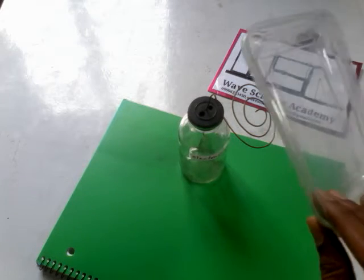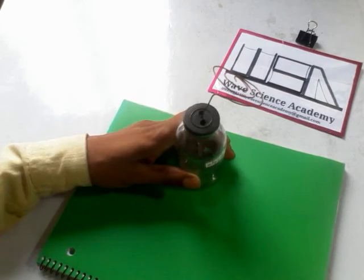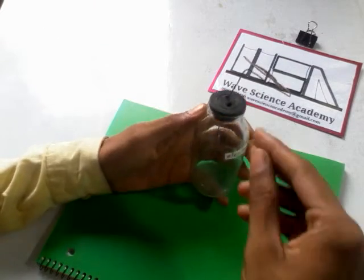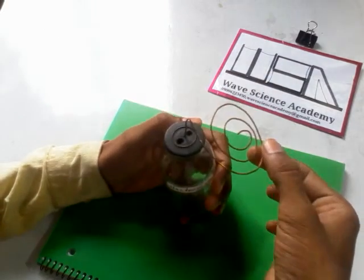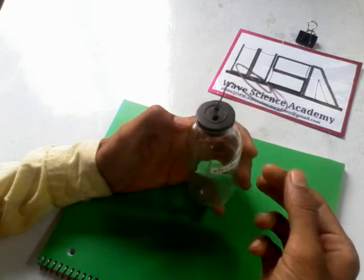Now, how to make an electroscope. You need a thick copper wire, 1 millimeter thickness, a glass bottle,